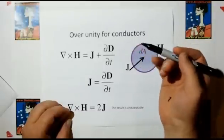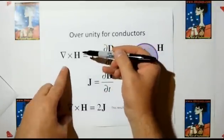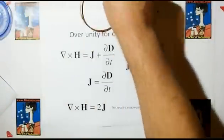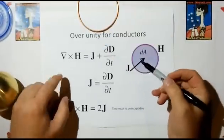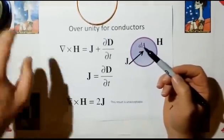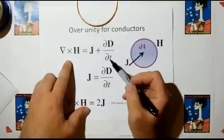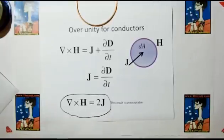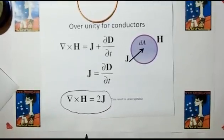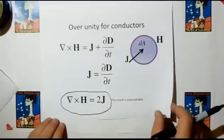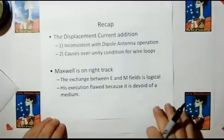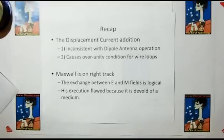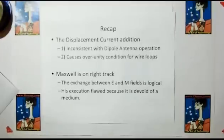So if we were to take just a loop of wire, the magnetic field contribution of just a plain old loop of wire, if there was a current in that, then the magnetic field contribution of that current in the wire is going to be J plus a displacement current created by J, and since we know that that's equal, then we get a magnetic flux equivalent of 2J, and this result is unacceptable because this says Maxwell's equations predict overunity, and overunity is not something I accept. So again, recap, the displacement current addition is inconsistent with the dipole antenna operation. It causes an overunity condition for wire loops.